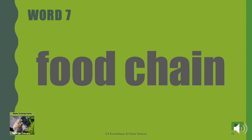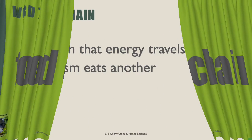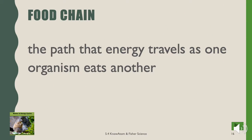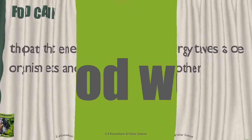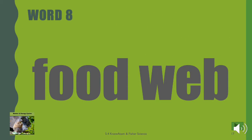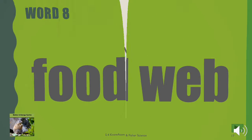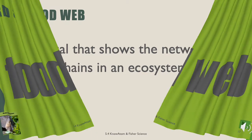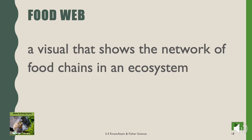Food chain. A food chain is the path that energy travels as one organism eats another. Food web. A food web is a visual that shows the network of food chains in an ecosystem.